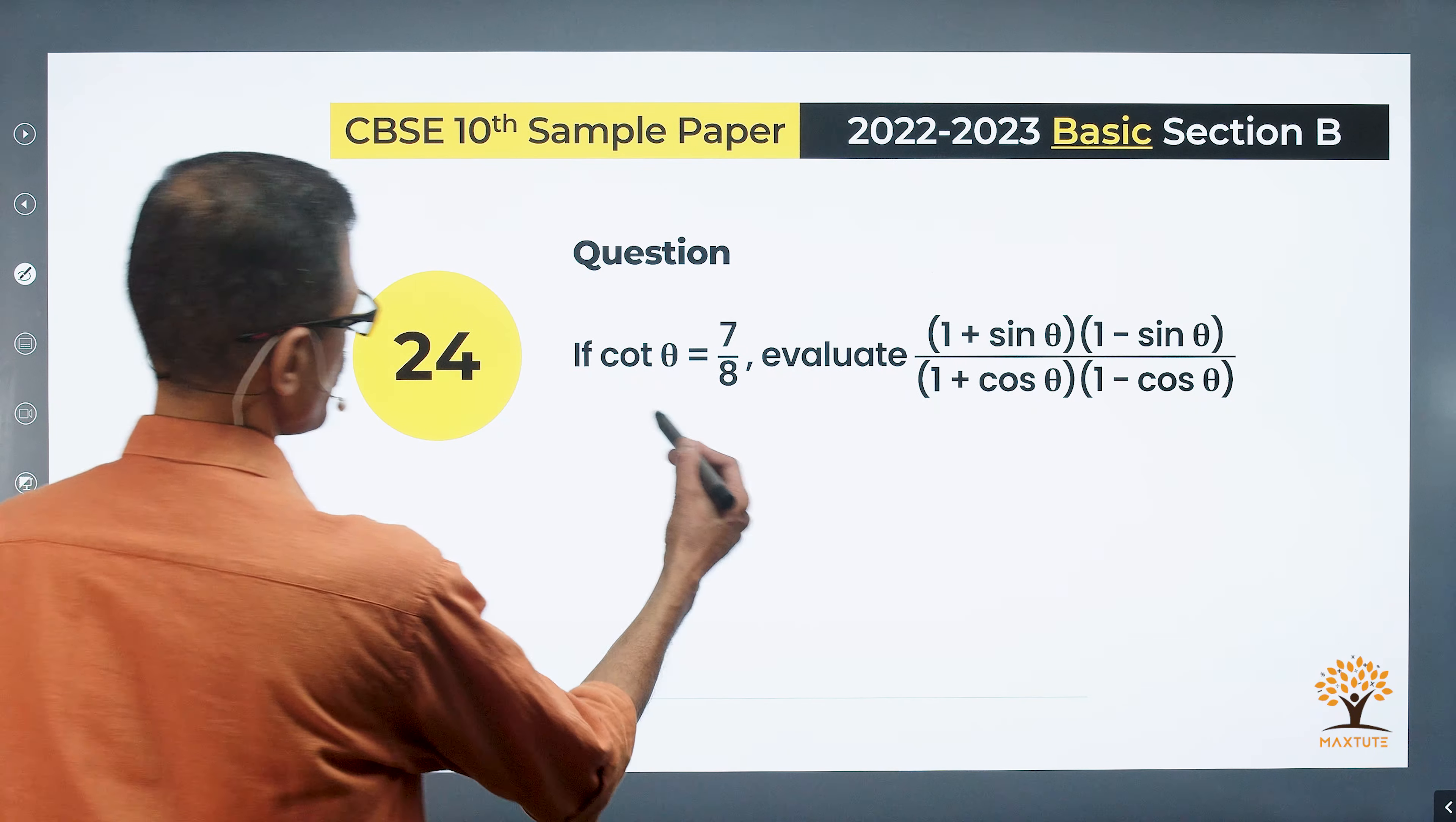This is of the form x plus y into x minus y, so it's x squared minus y squared. 1 minus sine squared theta is the numerator divided by, again the same thing in the denominator, x plus y into x minus y. So x squared minus y squared. This is 1 minus cos squared theta.